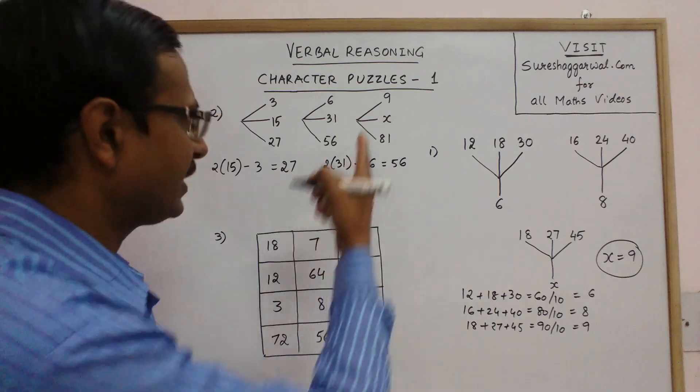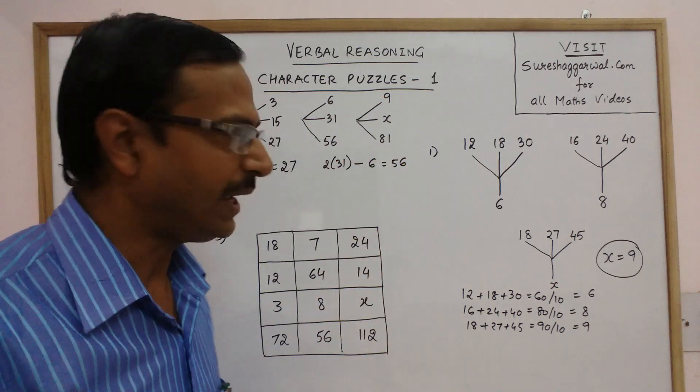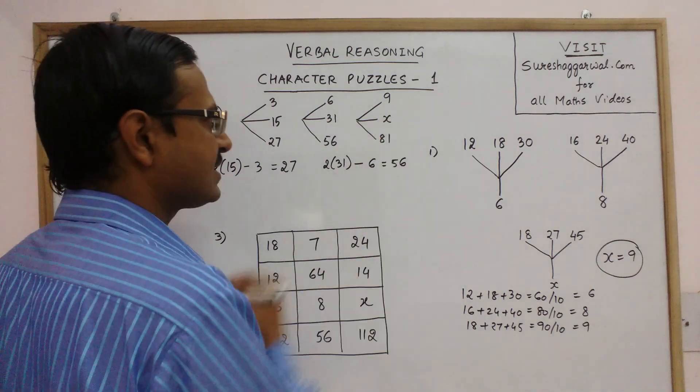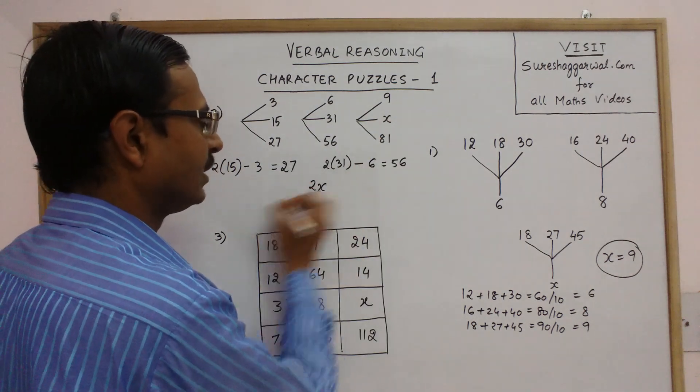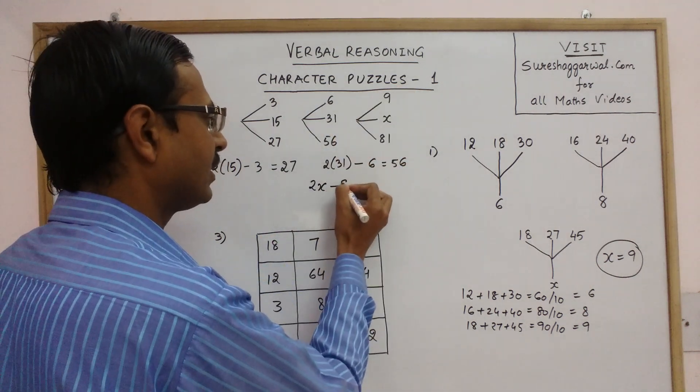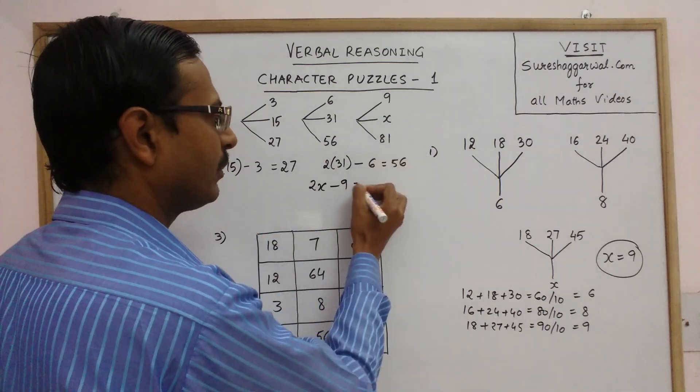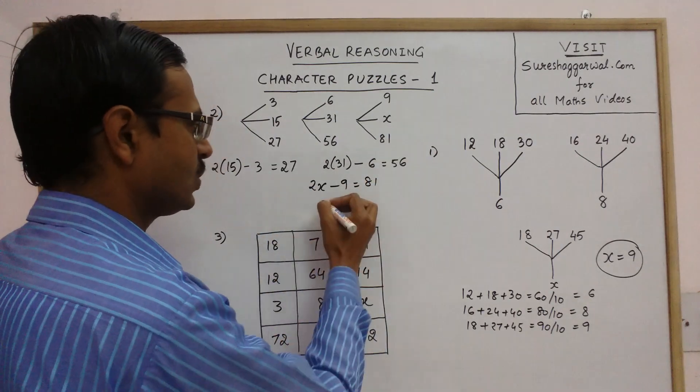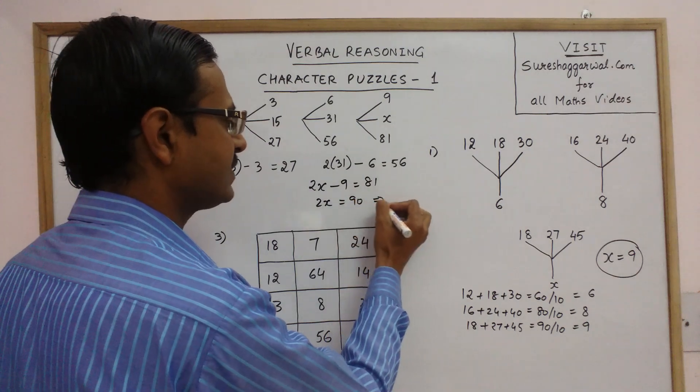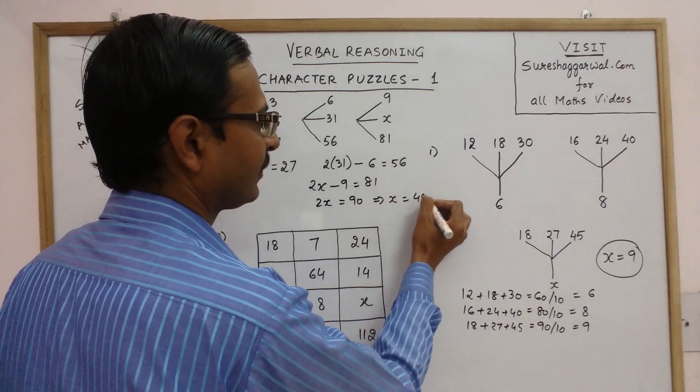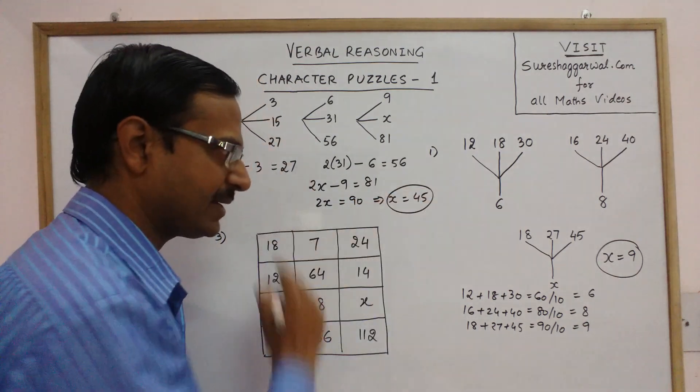Now, let us apply this pattern here, we will get the value of x. Double this number, 2x and subtract the upper number, 9. You get the lower number, 81. So 2x becomes 90, x becomes 45. So this is the value of x.